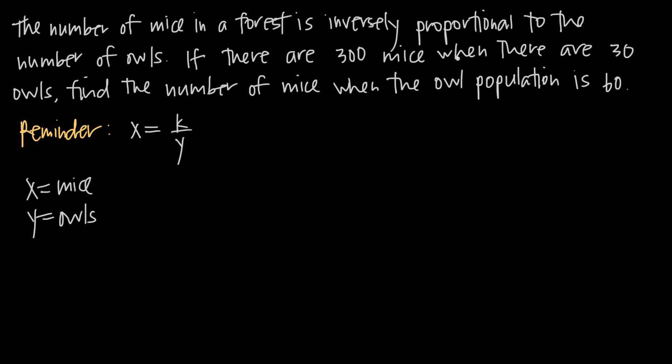So the problem tells us if there are 300 mice when there are 30 owls. So what we're going to do is plug 300 in for x since x is equal to mice. So we're going to say 300 is equal to k over 30 because there are 30 owls and y is equal to owls. Now these problems are almost always a two-step problem where we plug in the values we've been given, we solve for a value of k and then we take that value of k along with the value we've been given in the question and we find the other value.